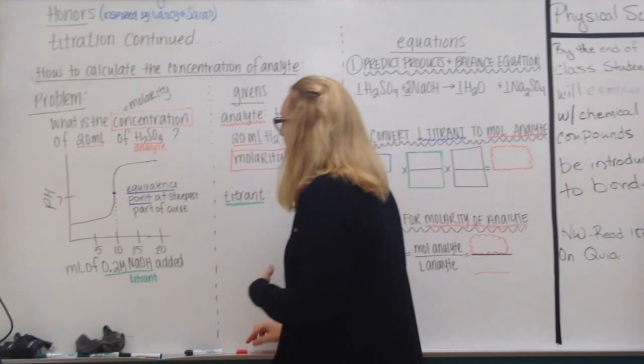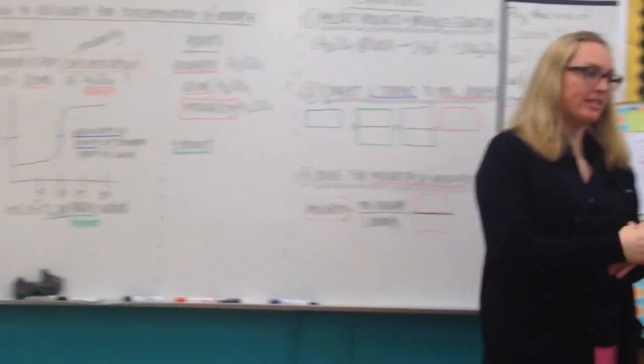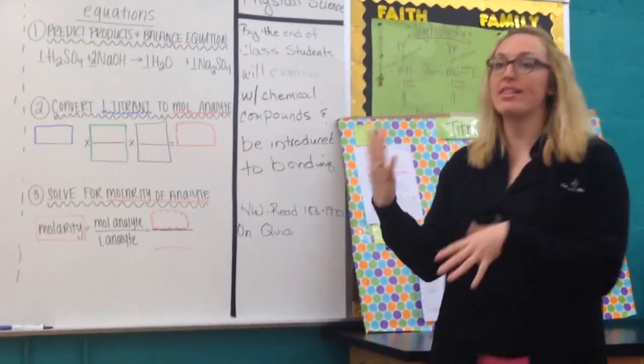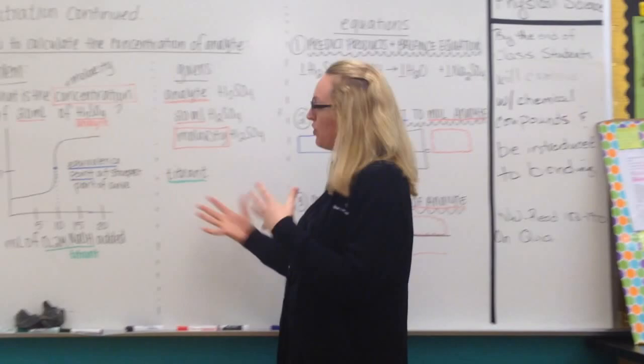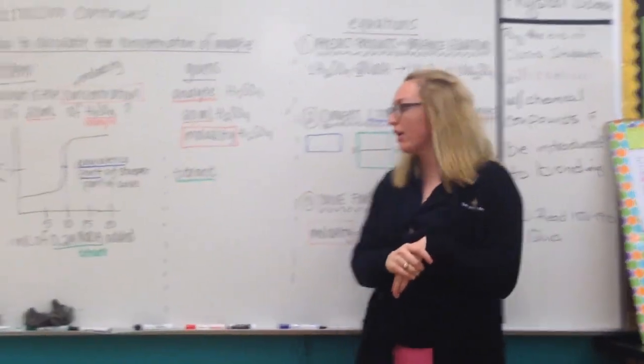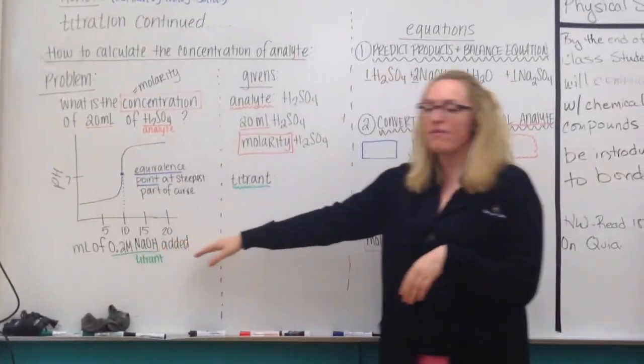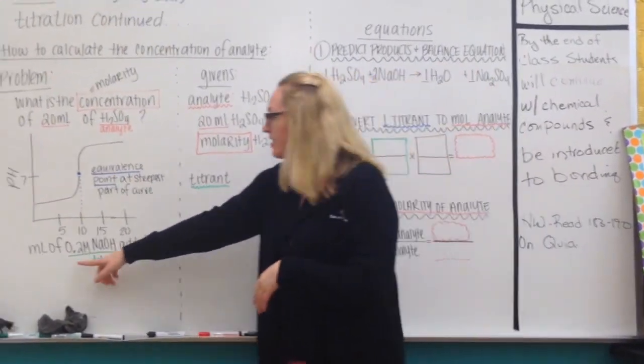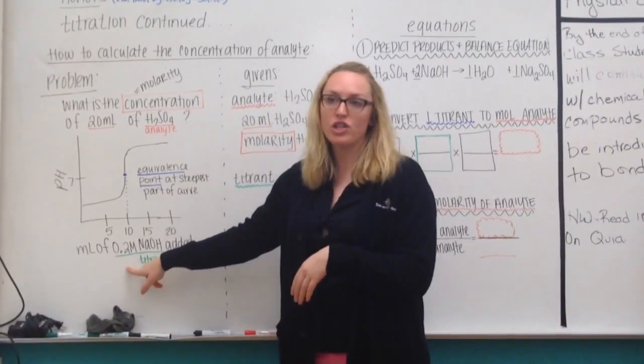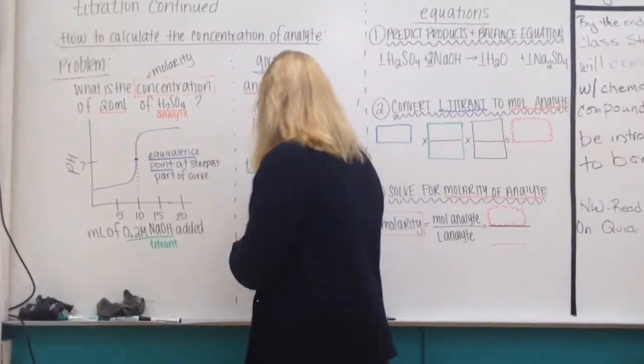Now when it comes to information about my titrant, that's when I need to look at the graph for information. So there's two things about the titrant I'm going to pull out here. One, in the label of the graph on the axes, it's going to tell me the concentration or molarity of titrant, which is 0.2.